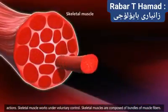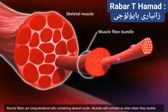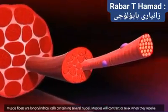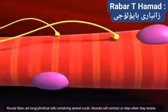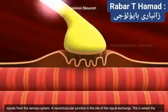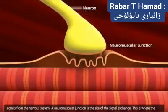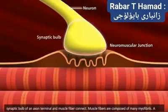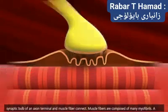Skeletal muscles are composed of bundles of muscle fibers. Muscle fibers are long cylindrical cells containing several nuclei. Muscles will contract or relax when they receive signals from the nervous system. A neuromuscular junction is the site of the signal exchange — where the synaptic bulb of an axon terminal and muscle fiber connect.